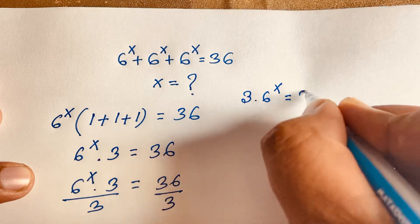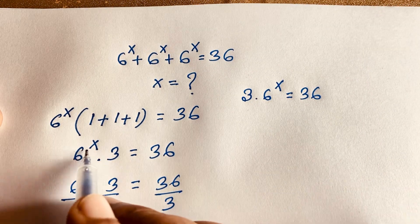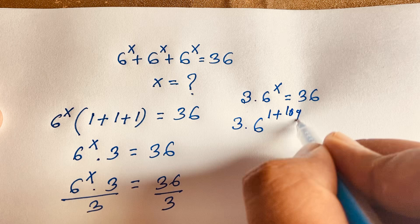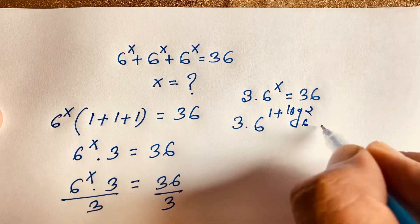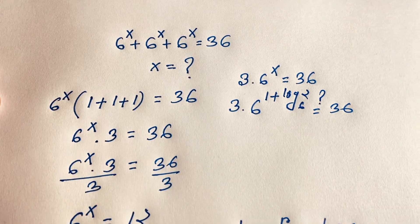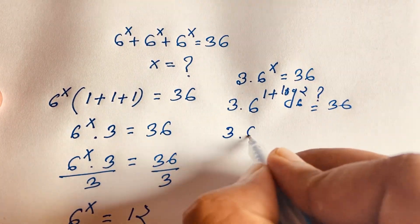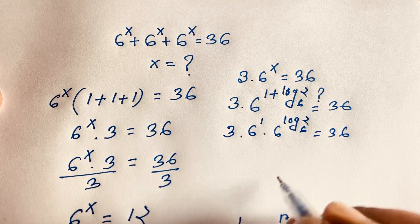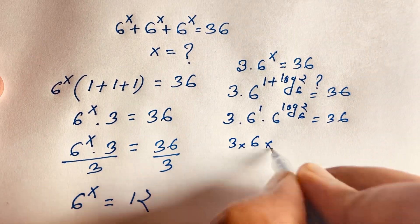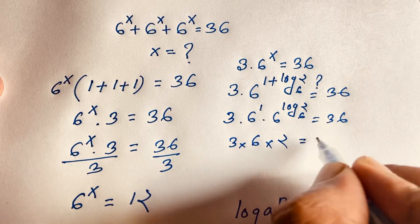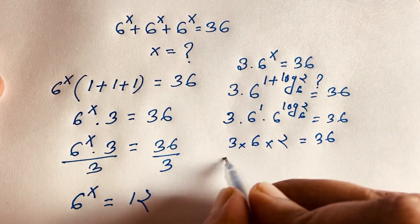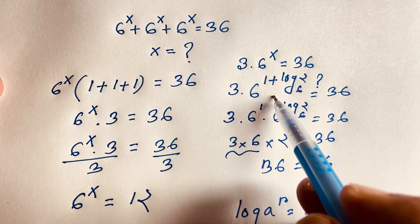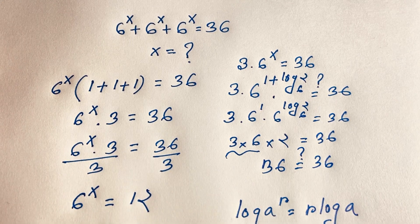If we substitute back, 6 to the power x is equal to 36, and 6 to the power x times 3 equals 36. Now 3 times 6 to the power x — where x equals 1 plus log 2 base 6 — gives us 3 times 6 to the power 1 times 6 to the power log 2 base 6. Since 6 to the power log 2 base 6 equals 2, it will be 3 times 6 times 2, which is 18 times 2, equaling 36 is equal to 36. So x is equal to 1 plus log 2 base 6 is confirmed as our final answer.